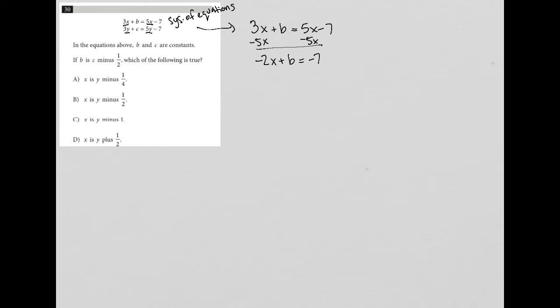For the second equation, I start off with 3y plus c equals 5y minus 7. I can subtract 5y from both sides, and I'm left with negative 2y plus c equals negative 7. So there's a simplified version of these two equations.